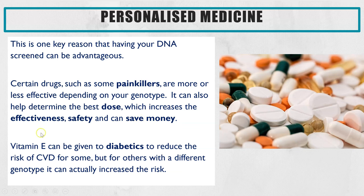It can also link to other examples — for instance, diabetics in some cases can take vitamin E to lower the risk of cardiovascular disease, but for some people with diabetes with a particular genotype, taking vitamin E would actually increase their risk of developing cardiovascular disease. So those are just a couple of examples of how either the dose or particular medicines can be personalized depending on the alleles that you have.